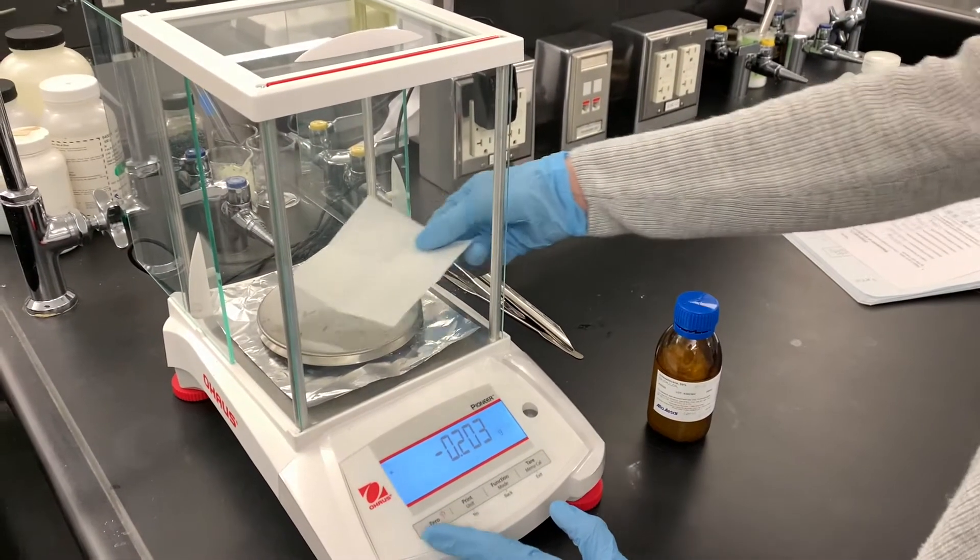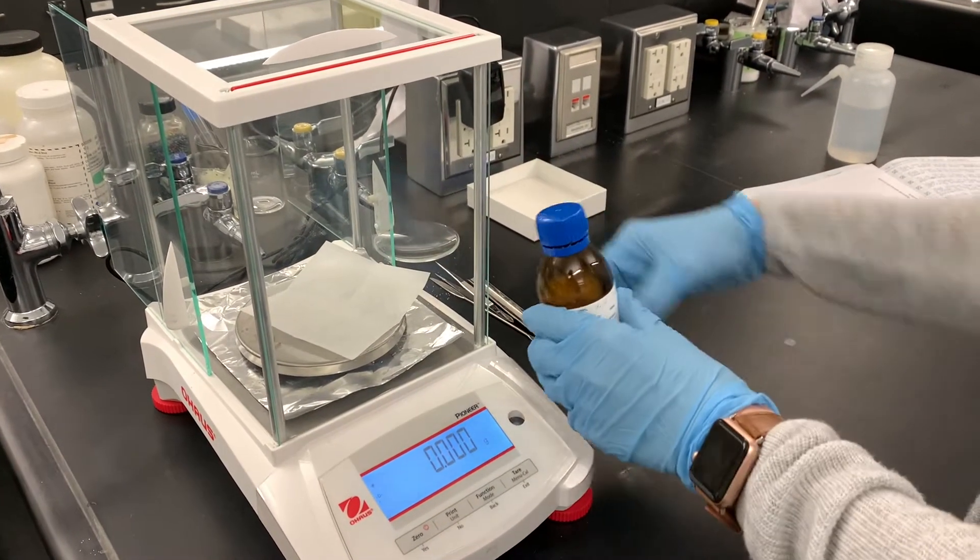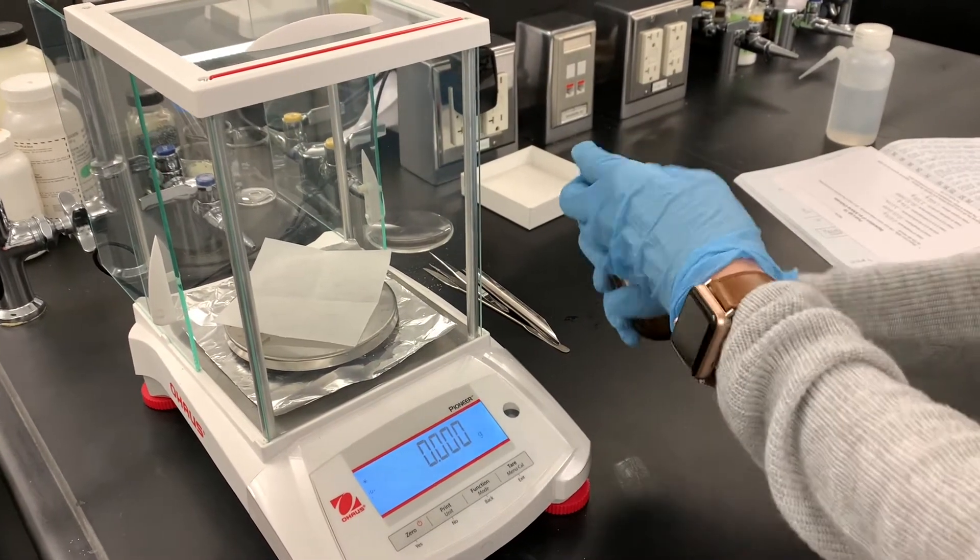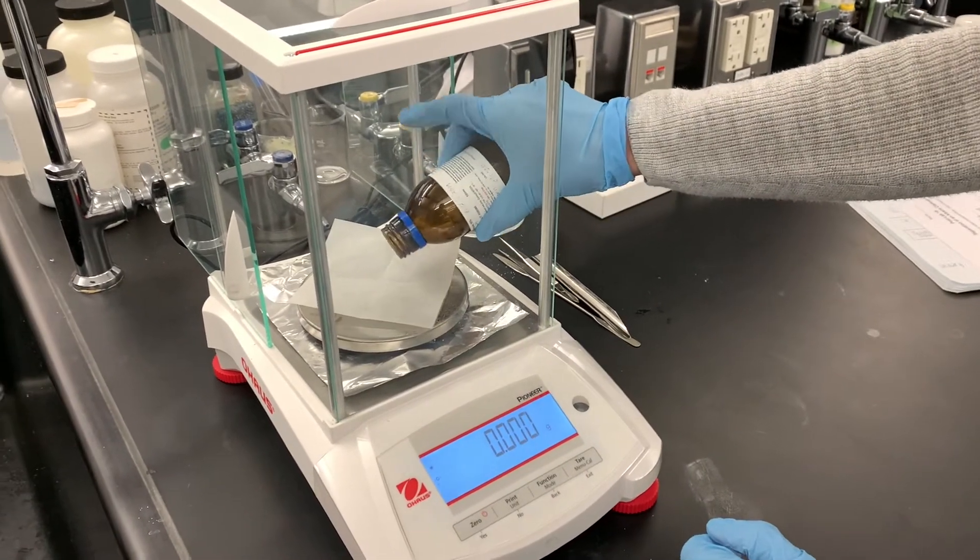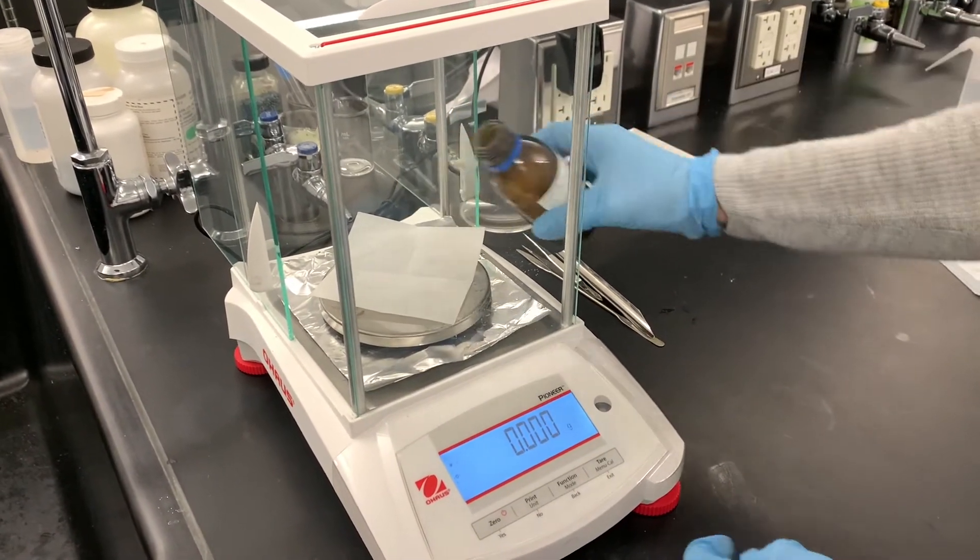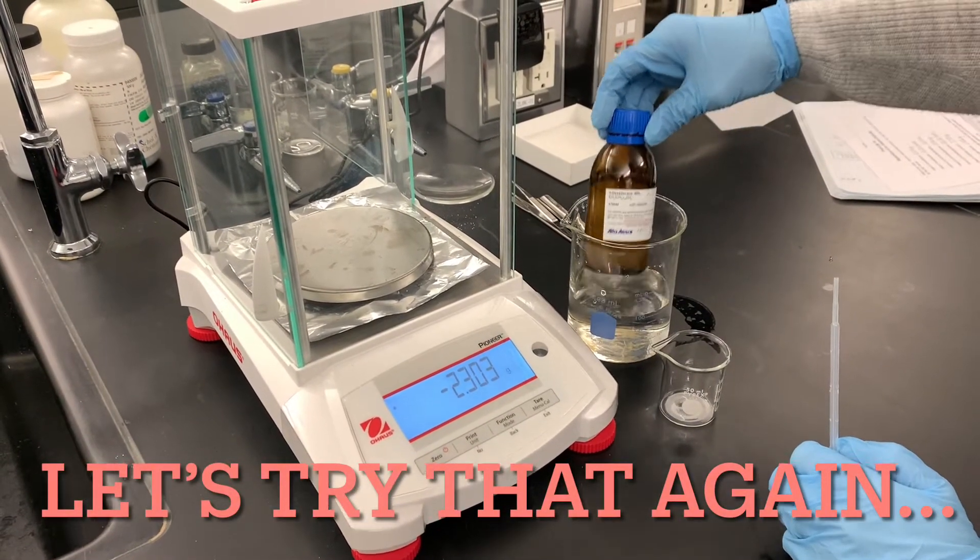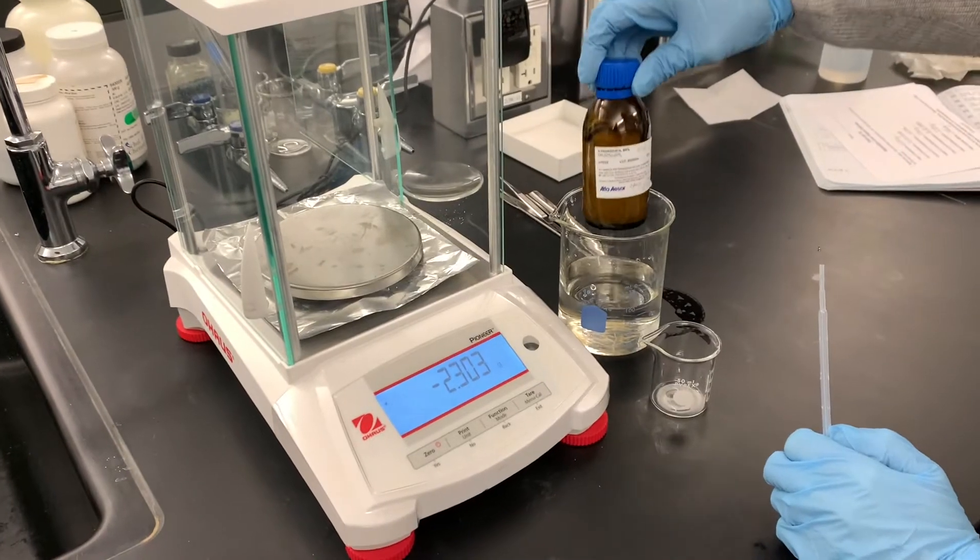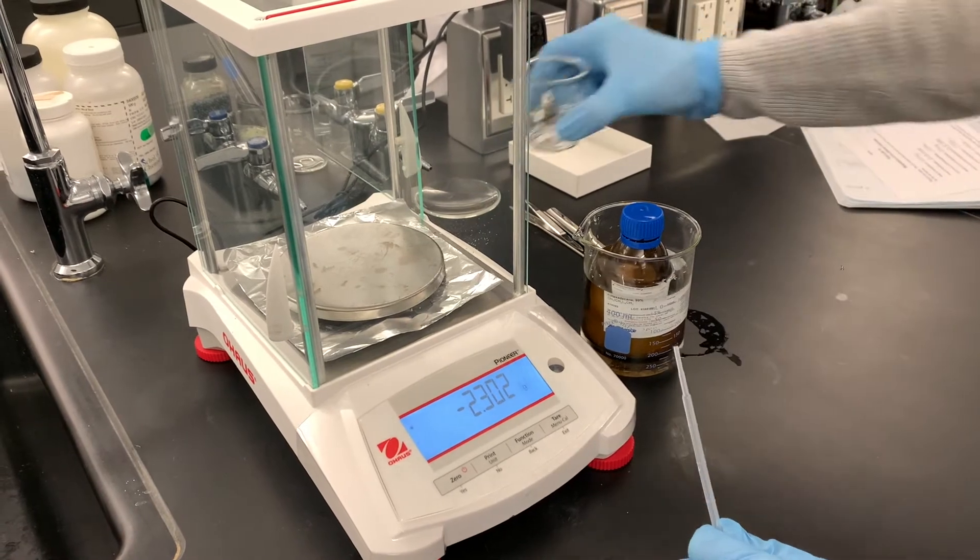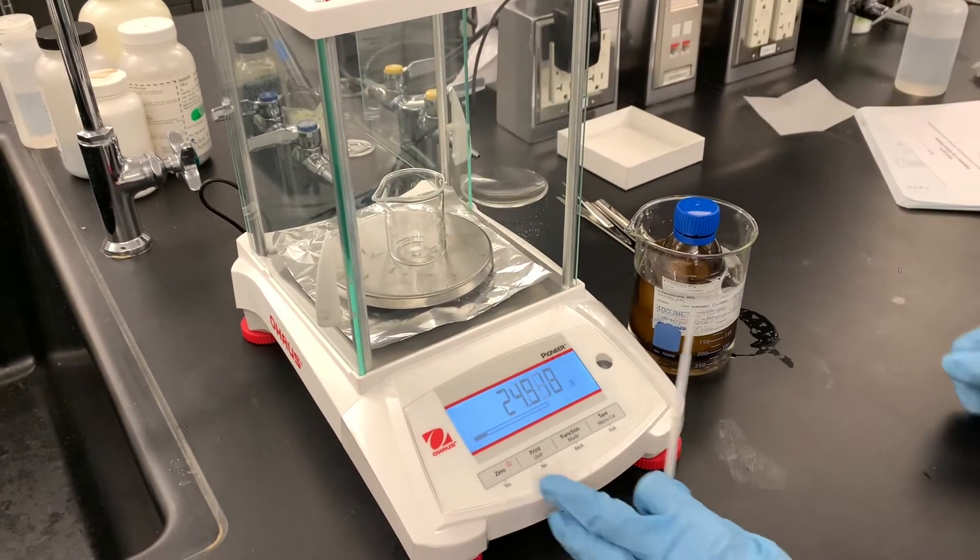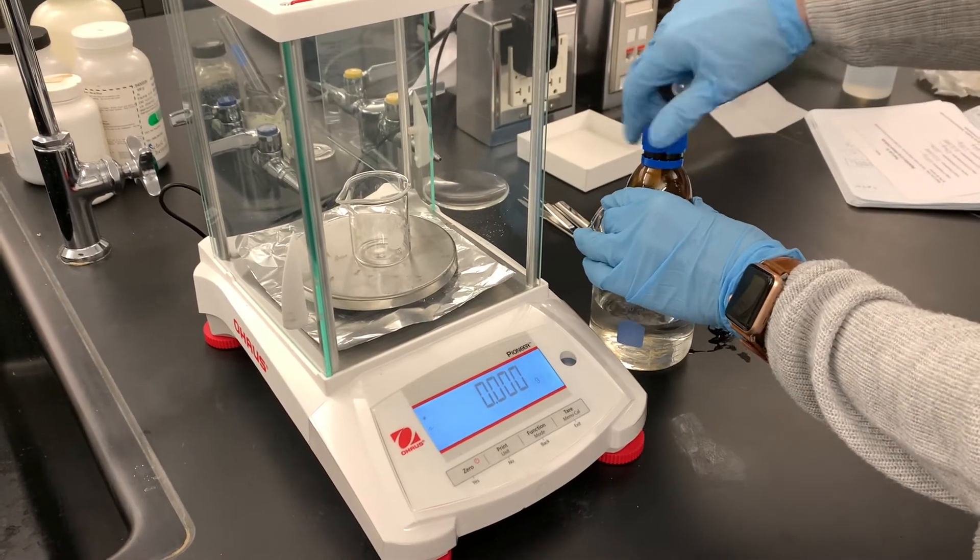We're going to be starting with about 2.3 grams of hexadecane. Hexadecane's freezing point is right around room temperature, so I have it in this beaker of warm water. It's just helping it melt. We're going to measure it right into this 50 milliliter beaker.